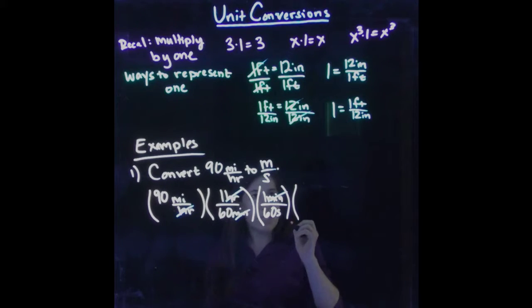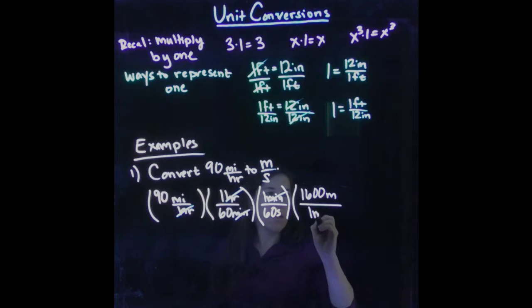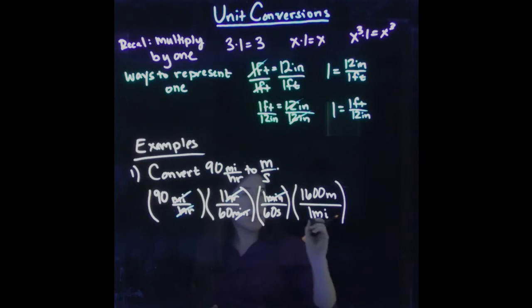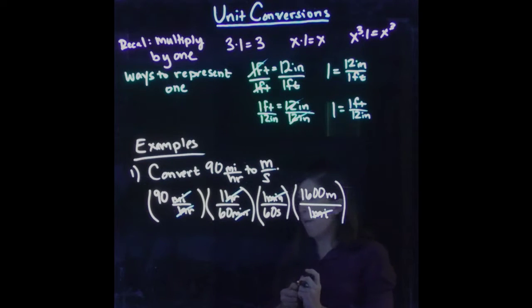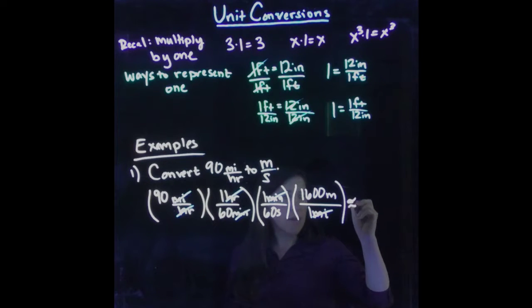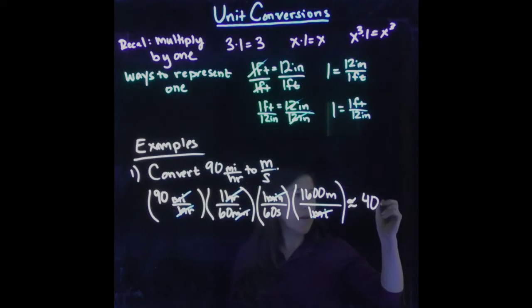Then finally, to get rid of the miles. So let's see, it's like 1,600 meters in a mile, approximately. m for meters, mi for miles. So that's good. Our miles cancel out. And then we can just multiply through. And if I plug this into a calculator, approximately, you end up with 40 meters per second.